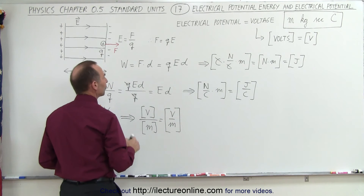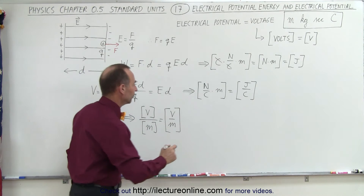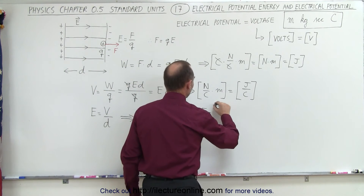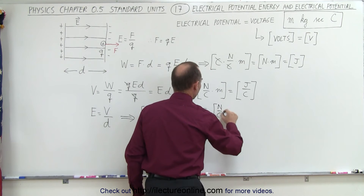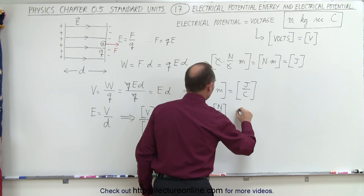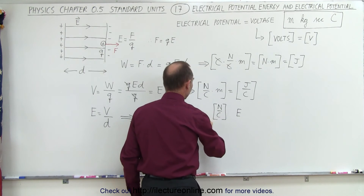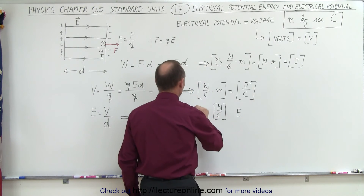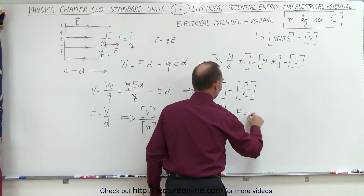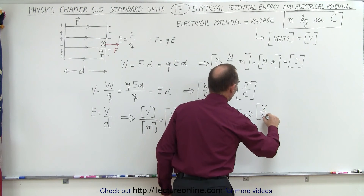So now we have two expressions or two units for the electric field. We can say that the electric field can be expressed in terms of newtons per coulomb, and the electric field can also be expressed in terms of volts per meter.